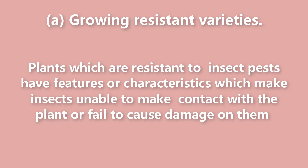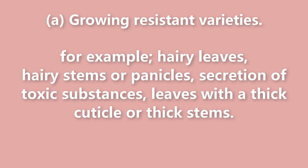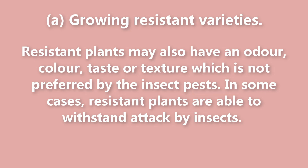Plants which are resistant to insect pests have features or characteristics which make insects unable to make contact with the plant or fail to cause damage on them. For example: hairy leaves, hairy stems or panicles, secretion of toxic substances, leaves with a thick cuticle, or thick stems. Resistant plants may also have an odor, color, taste or texture which is not preferred by the insect pests.